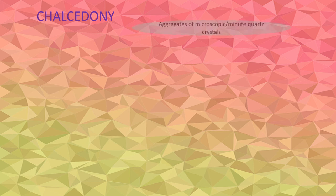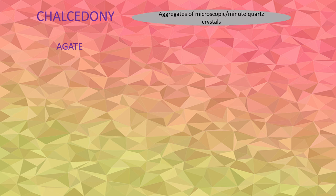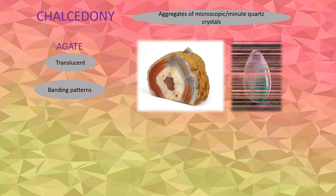Apart from this, chalcedony are aggregates of microscopic or minute quartz crystals. Those showing distinct patterns are called agate, which has been widely used as ornamental stone for centuries.